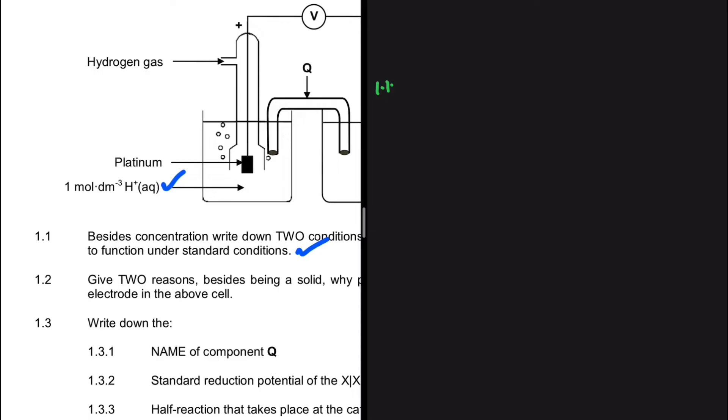Pressure is one of our standard conditions at 101.3 kilopascals. Another standard condition we have is the temperature at 298 kelvins or 25 degrees Celsius. That is the answer to 1.1.